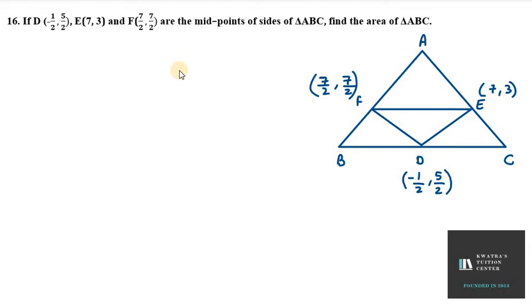So we have to find the area of triangle ABC here, and we have to use the coordinates of D, E, F. So we had taught in class 9th that if we have D as midpoint, E as midpoint, F as midpoint,